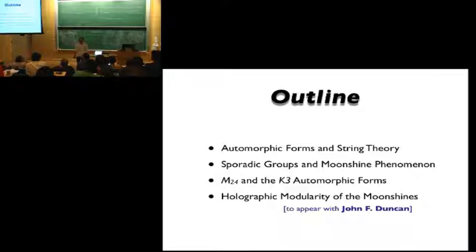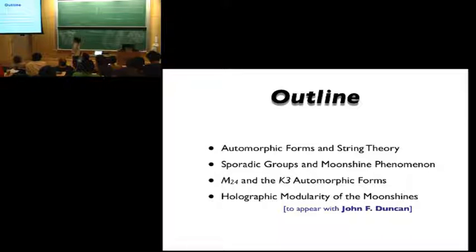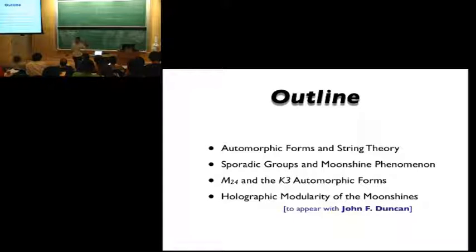The outline of my talk is the following. I'll give a rather long introduction to the relation between automorphic forms and string theory, and a shorter overview of sporadic groups and what moonshine is. Then I'll talk about the relation between M24 and all kinds of automorphic forms that you get when you compactify type 2 string on K3. And in the end, I hope to have time to talk about some work in progress with John Duncan on the modularity properties of the moonshine and why ADS-CFT can help us to understand them.